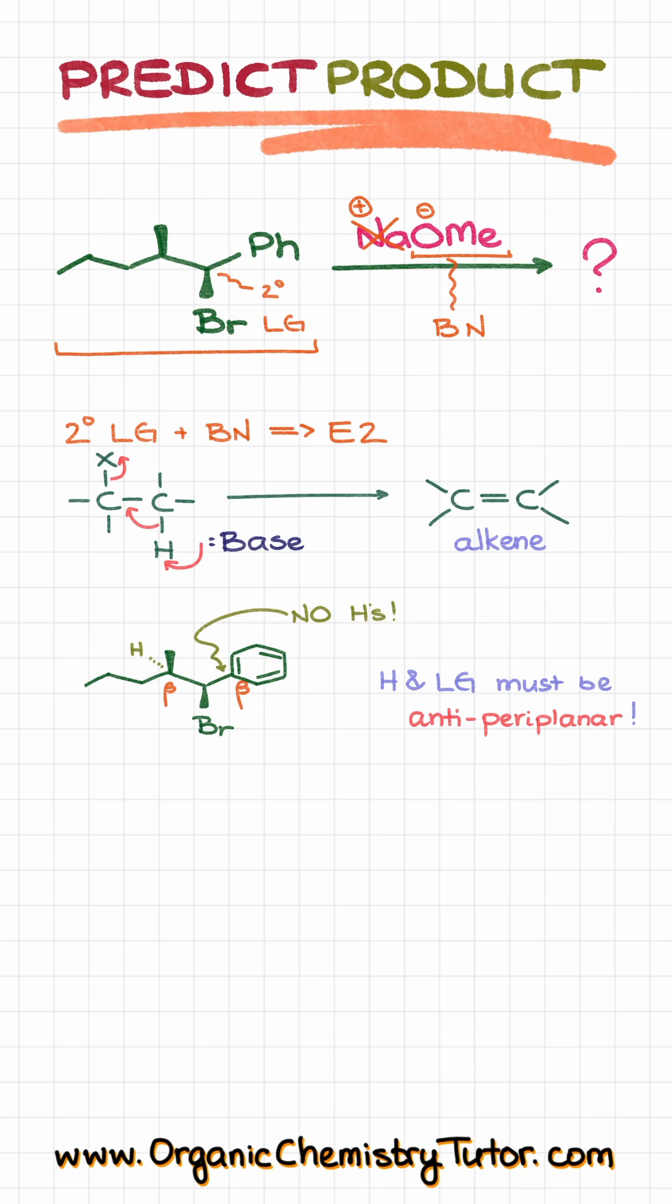Now, another thing to keep in mind about the E2 reactions is that the hydrogen and the leaving group must be anti-periplanar to each other. Or, in other words, that means that they need to be looking in the opposite directions. Which is already the case that we have here with our bromine looking at us and the hydrogen looking away from us, which means that I can take my base and have it pull off our hydrogen, like so.